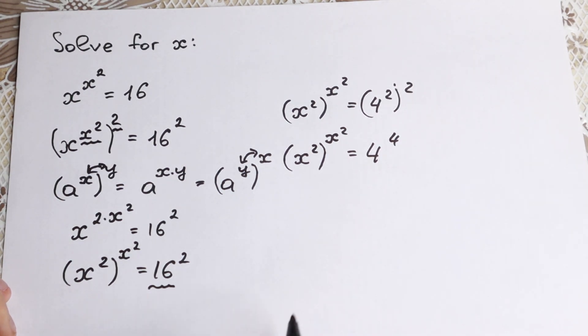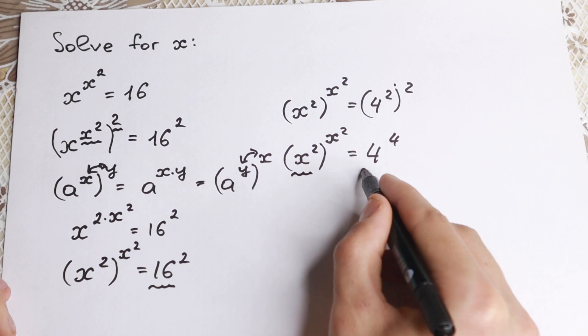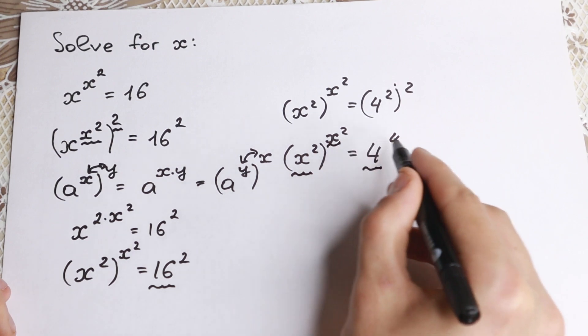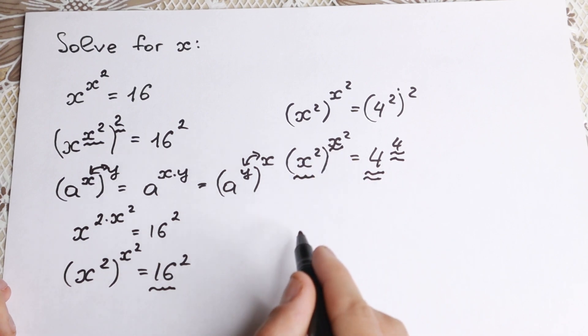And right now really interesting moment. Because we have same base right here, and same base right here. And same exponent and same exponent as well. So as you can see we have same base, same exponent on the left, and same base, same exponent on the right.